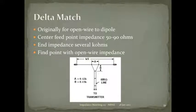Feed-point matching techniques require adjustment at the antenna — you have to be up there or lower the antenna repeatedly. Some modern approaches use a remote auto-tuner at the antenna base. For example, placing an auto-tuner at the base of a vertical allows you to use lighter coax like RG-8X without the high SWR and loss you'd have if the tuner were in the shack. But these are still single-frequency matches.